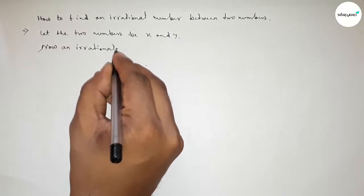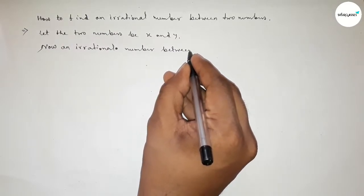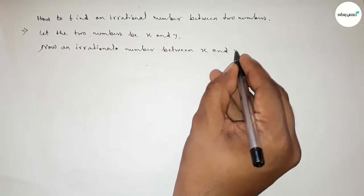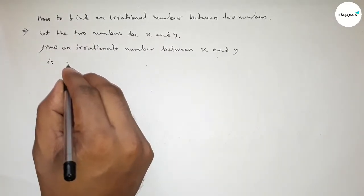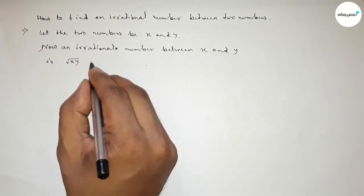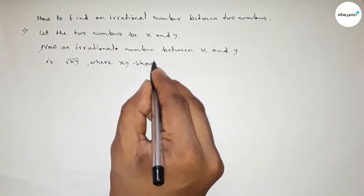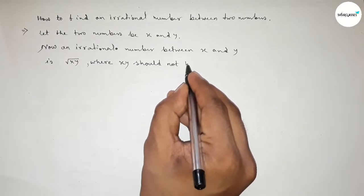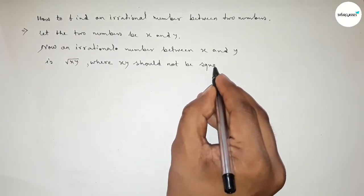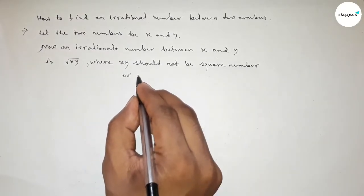Now I'm going to apply an important method for finding an irrational number. An irrational number between x and y is root over xy, where xy should not be a perfect square or square number, like 4, 16, 25, 49, 36, etc.